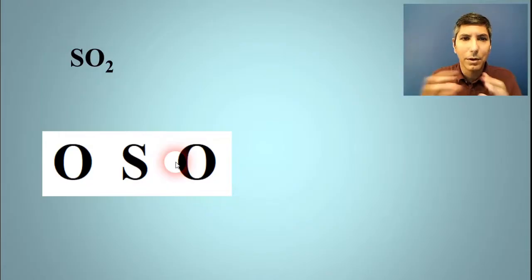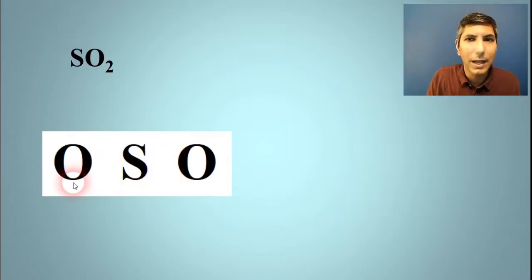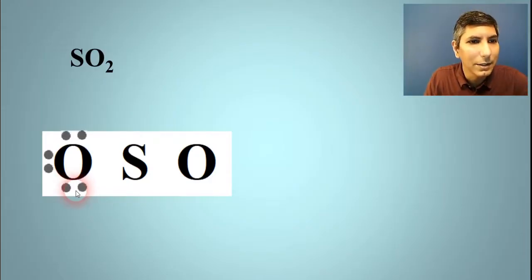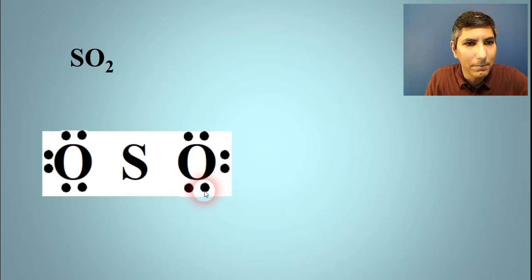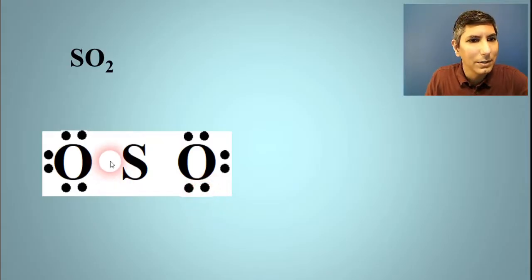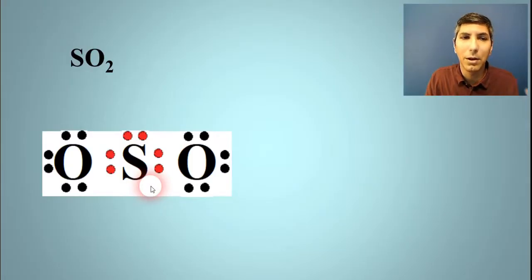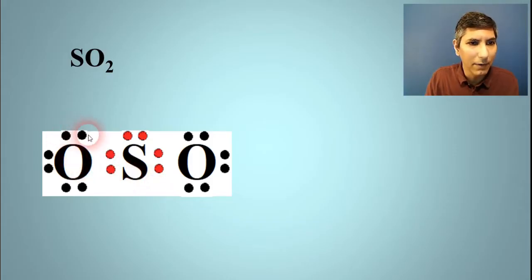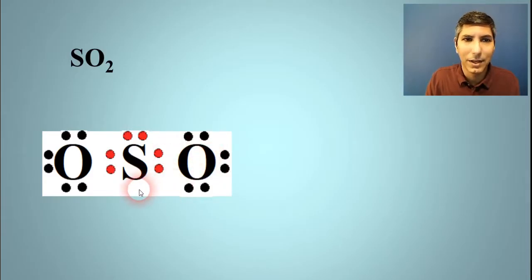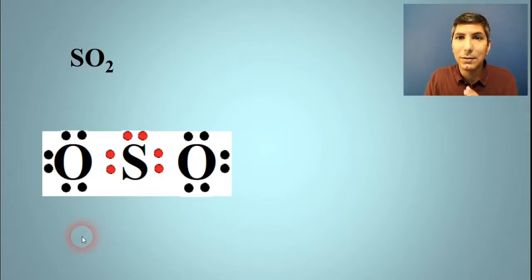Let's start with the outside and work our way in. Each oxygen needs to have six dots brought in because oxygen is in group 16 — six dots for this one and six dots for that one. And looking at the table for sulfur, it's going to have six dots as well. Now we ask ourselves, does everything have eight? The answer is no, because the oxygens do seem to have eight if you include the shared pairs in the middle, but sulfur only has six.